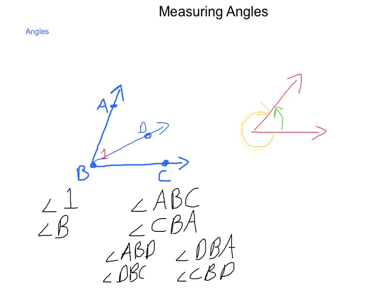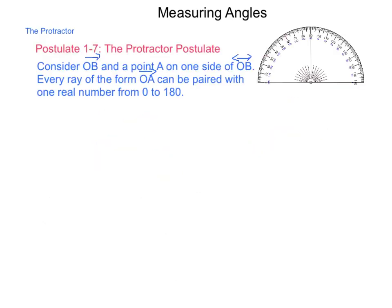So, let's start talking about measuring angles. We will begin with the protractor postulate, which is postulate 1-7. The protractor postulate states, consider ray OB and a point A that is on one side or the other of OB. And, the reason for this is that we look at the interior angle.